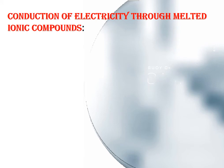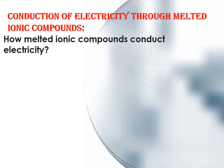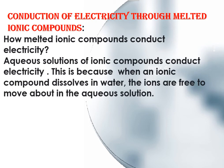When an aqueous solution of an ionic compound conducts electricity, this is because when an ionic compound dissolves in water, the ions are free to move about in the solution. The positive ions move towards the negative electrode, and the negative ions move towards the positive electrode. As a result, electricity flows between the electrodes through the external wire.